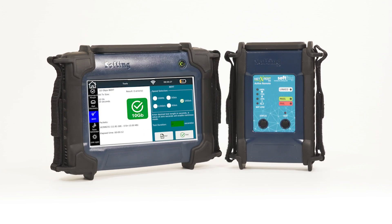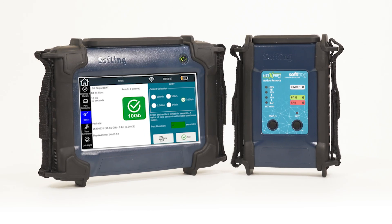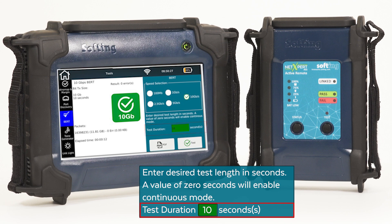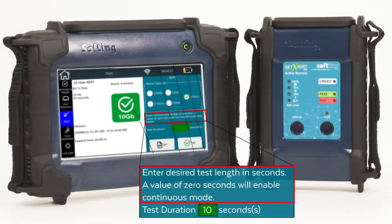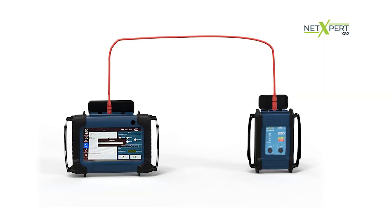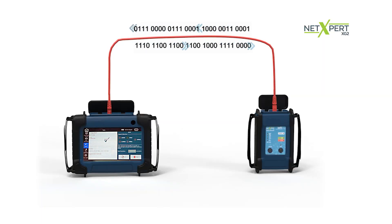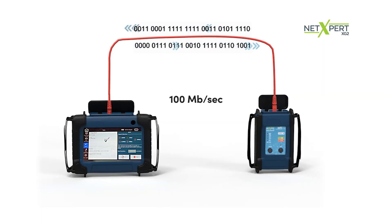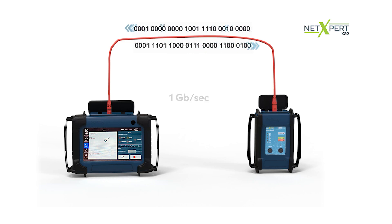Set discrete scan intervals, or run the test continuously to troubleshoot intermittent problems. The test is bi-directional, proving cable pair performance to 100 megabytes, 1 gig, or 10 gig speeds.